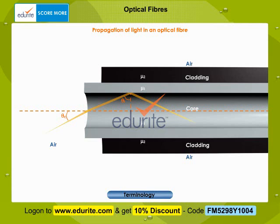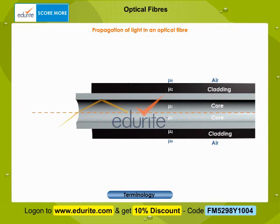The ray then crosses to the other side of the core, and because the fiber is more or less straight, the ray will meet the cladding on the other side at an angle which again causes total internal reflection. The ray is then reflected across the core again in the same manner. In this way, the light zigzags its way along the fiber, and thus the light gets transmitted to the end of the fiber. Because the cladding does not absorb any light from the core, the light wave can travel great distances.